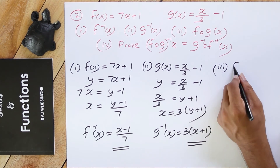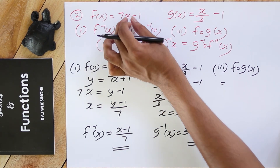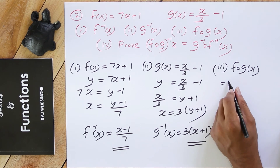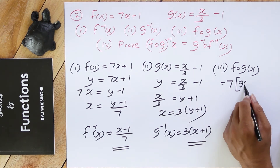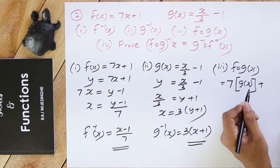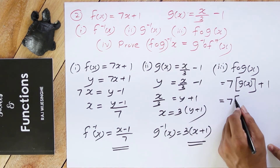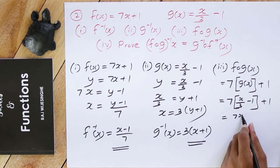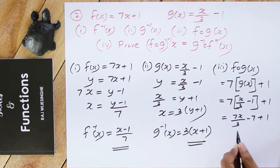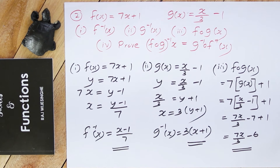Roman number 3: f∘g(x). g(x) should be substituted inside f(x). It is 7 times g(x) plus 1. g(x) is x over 3 minus 1, so it is 7 times (x over 3 minus 1) plus 1. Simplifying: 7x over 3 minus 7 plus 1, which is 7x over 3 minus 6. So the answer for f∘g(x) is 7x over 3 minus 6.